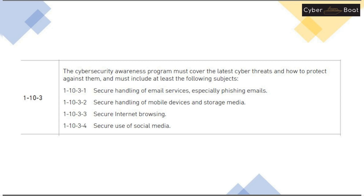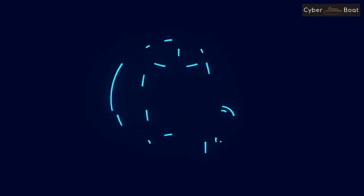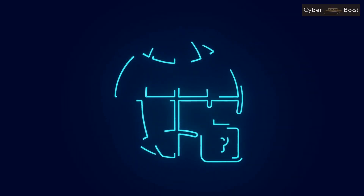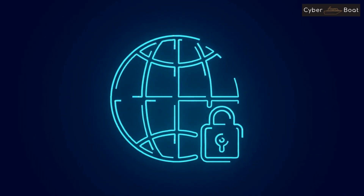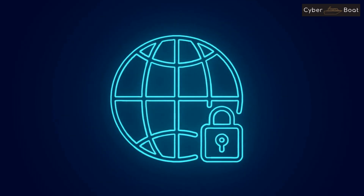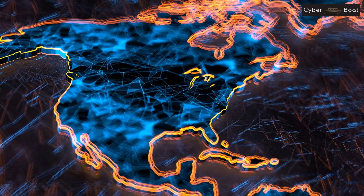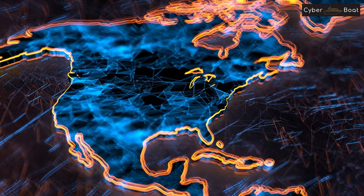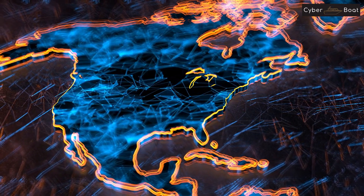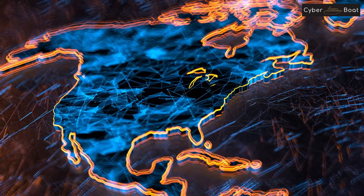The third control, 1-10-3, focuses on the specific topics that should be covered in the organization's cybersecurity awareness program. These topics include secure handling of email services (especially phishing emails), secure handling of mobile devices and storage media, secure internet browsing, and secure use of social media. These topics are important because they are common areas where cyber attacks can occur and employees need to be aware of the potential risks.